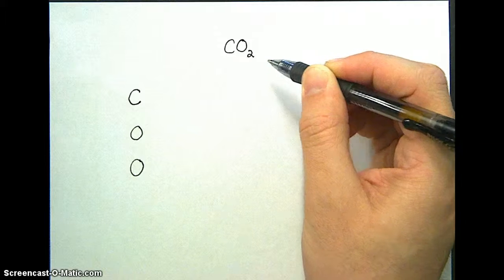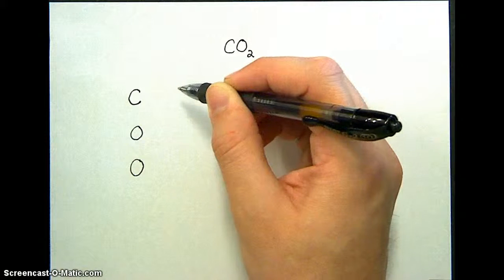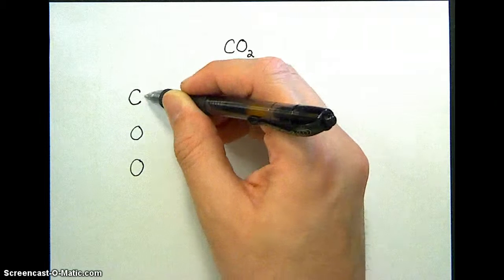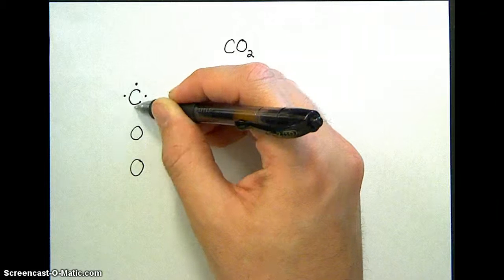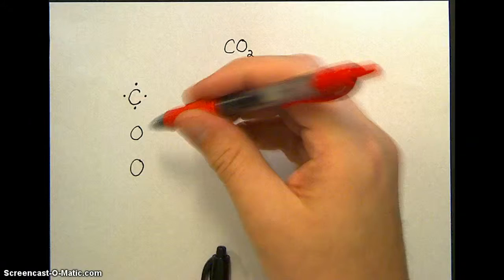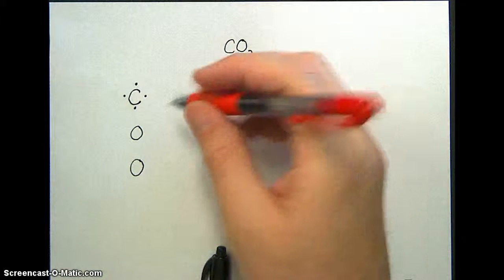And then I'm going to use the periodic table to figure out how many valence electrons I have for each. Carbon is in group 4, which means it will have 4 valence electrons. Each oxygen has 6 valence electrons, because they're in group 6.